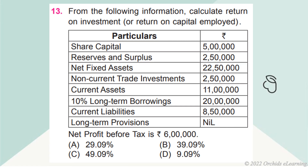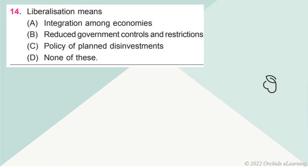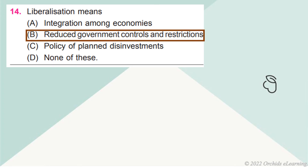Calculate return on investment, or return on capital employed. Net profit before tax is Rs. 6 lakh. Answer: a. 29.09%. Liberalization means — Answer b: Reduced government controls and restrictions.